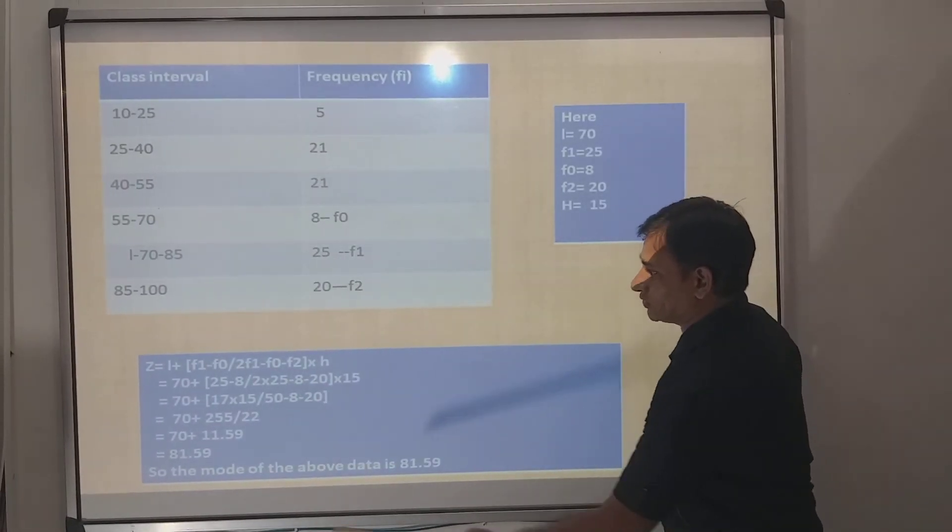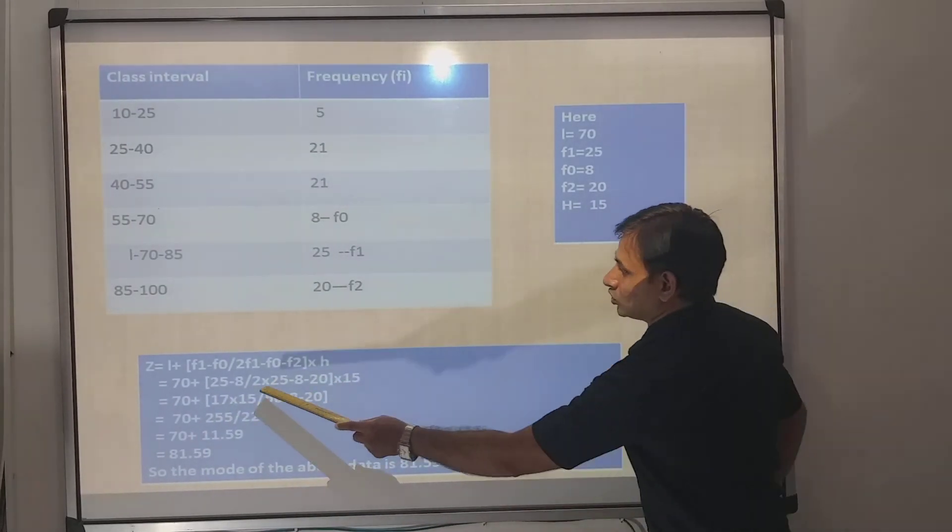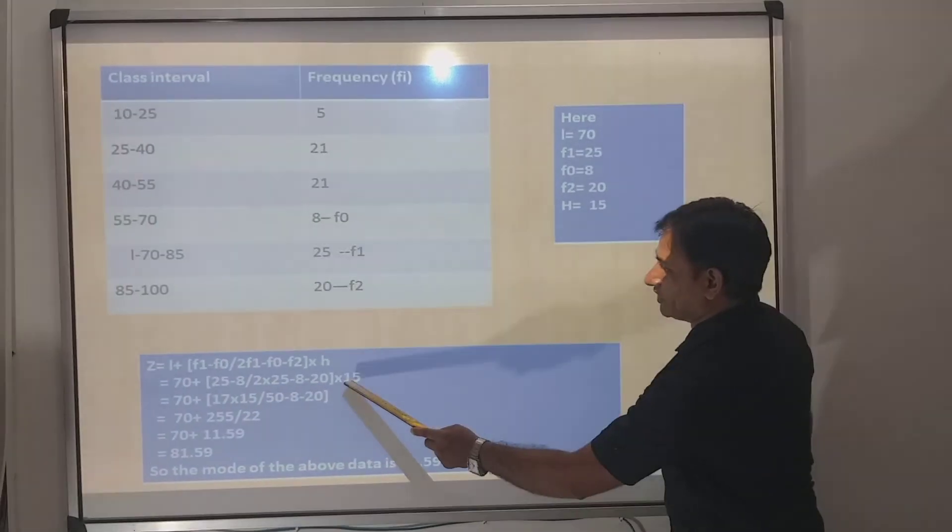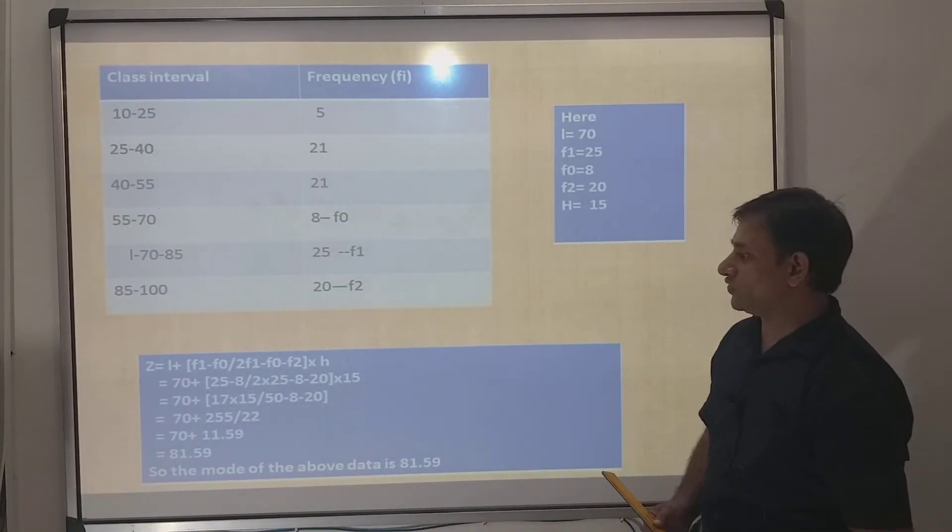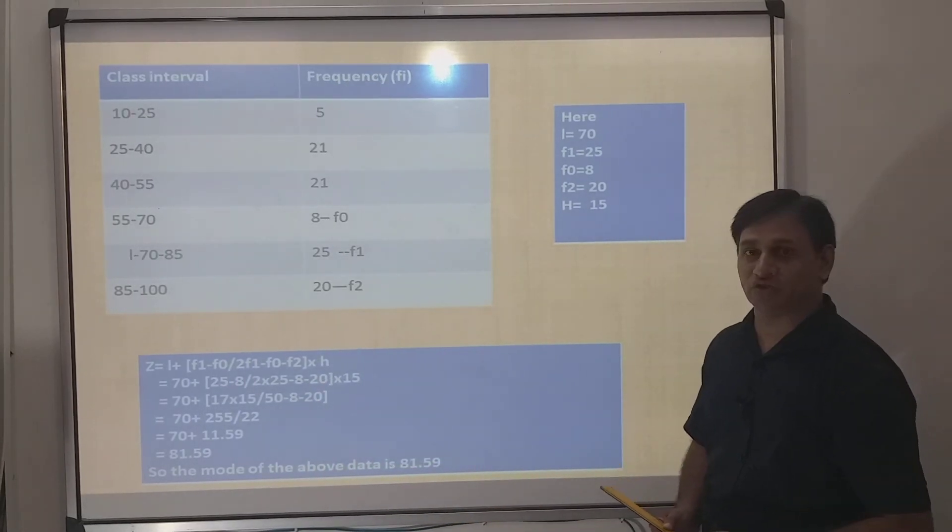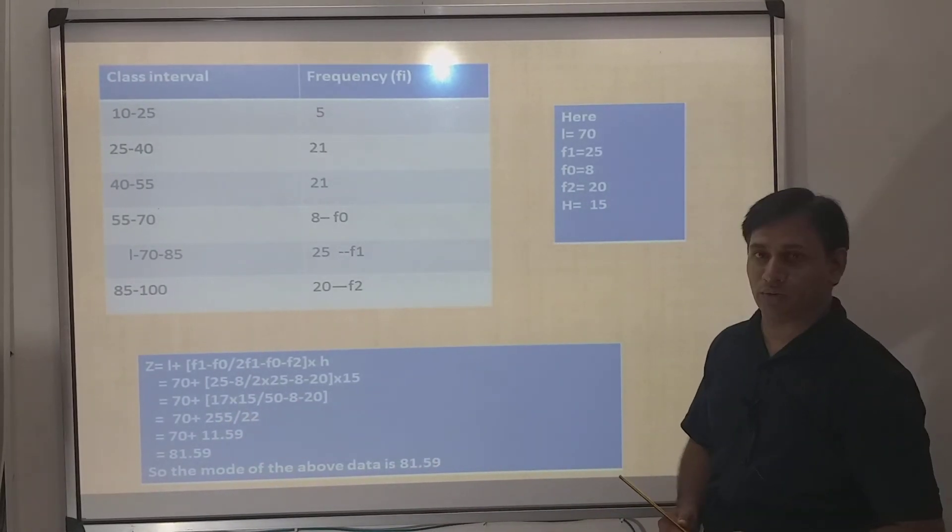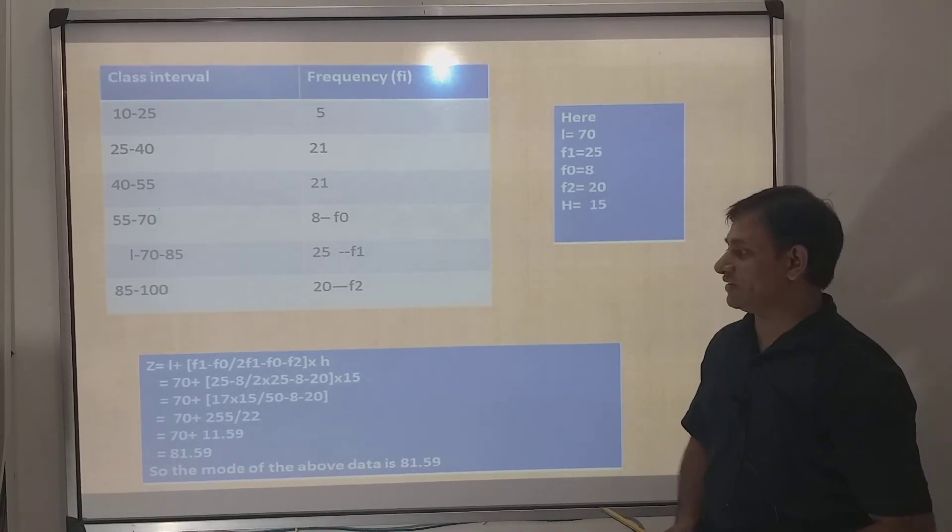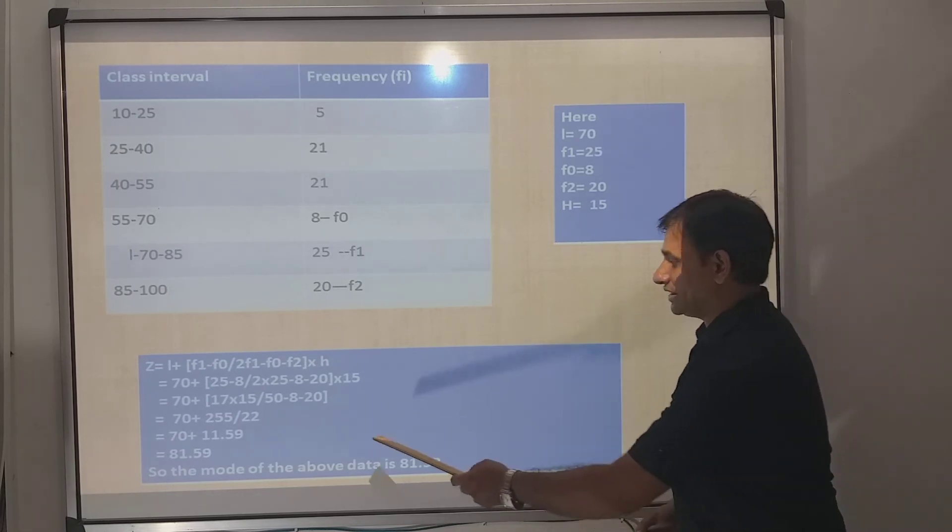Students, let us solve it out. 70 is as it is, 25 minus 8 is 17. 2 times 25 is 50 minus 8 minus 20. I have multiplied 17 with 15, which gives 255. 50 minus 8 minus 20: 50 minus 8 is 42, 42 minus 20 is 22. 255 divided by 22, I got 11.59. 70 plus 11.59 gives me 81.59. That is the mode of the given data.